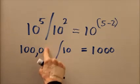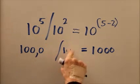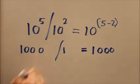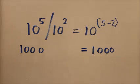100,000 divided by 100 is 1,000. Just lop off the two zeros like that. And, of course, anything divided by 1 is just itself. So that one works, too.